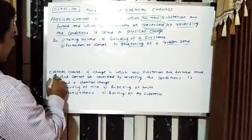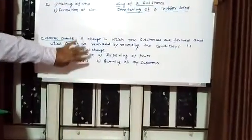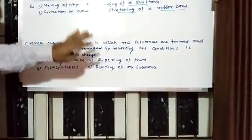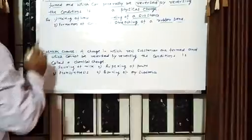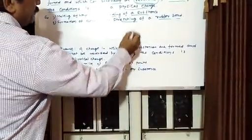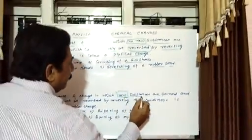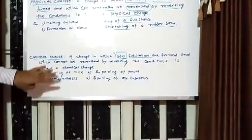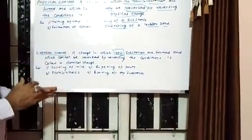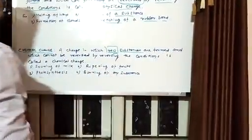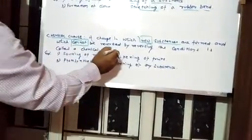Now we come to chemical changes. Please write down this definition. I have made both explanations in such a way that you can understand the major difference. In physical changes there are no new substances, but in chemical changes, new substances are formed. In chemical changes, whenever the change occurs, you will get new substances, and it cannot be reversed — which cannot be reversed. Please note down both definitions, these are very important.